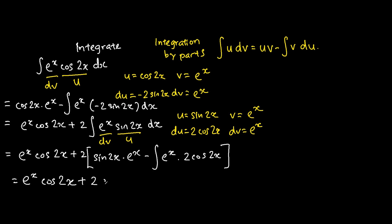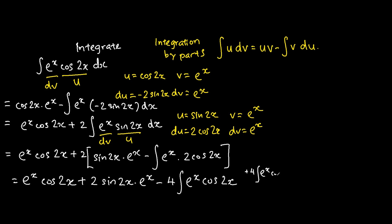We have 2 sine 2x times e to the power of x minus the integration of e to the power of x cosine 2x. As you can see, this is the same integral as at the beginning of the question. What we will do is add the integration of e to the power of x cosine 2x to both sides, so now we will have 5 times the integration of e to the power of x cosine 2x.